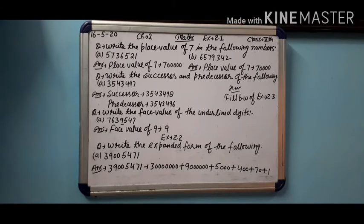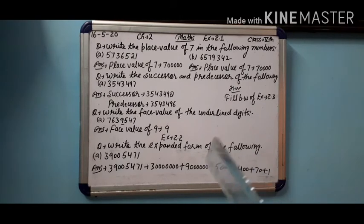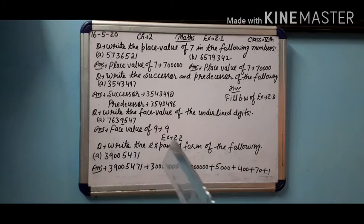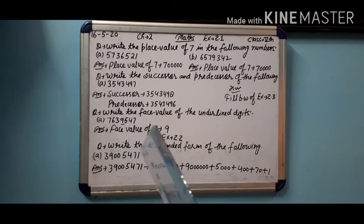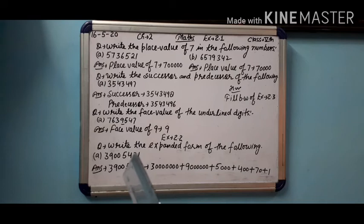Next digit is nine, so write nine. After nine how many digits? Count: one, two, three, four, five, six - six digits. So six zeros. Now this zero we don't write, we skip it. In expanded form zeros are not written. Next number is five, after five how many digits? Three digits, so three zeros. Plus next number four, after four how many digits? Two zeros.